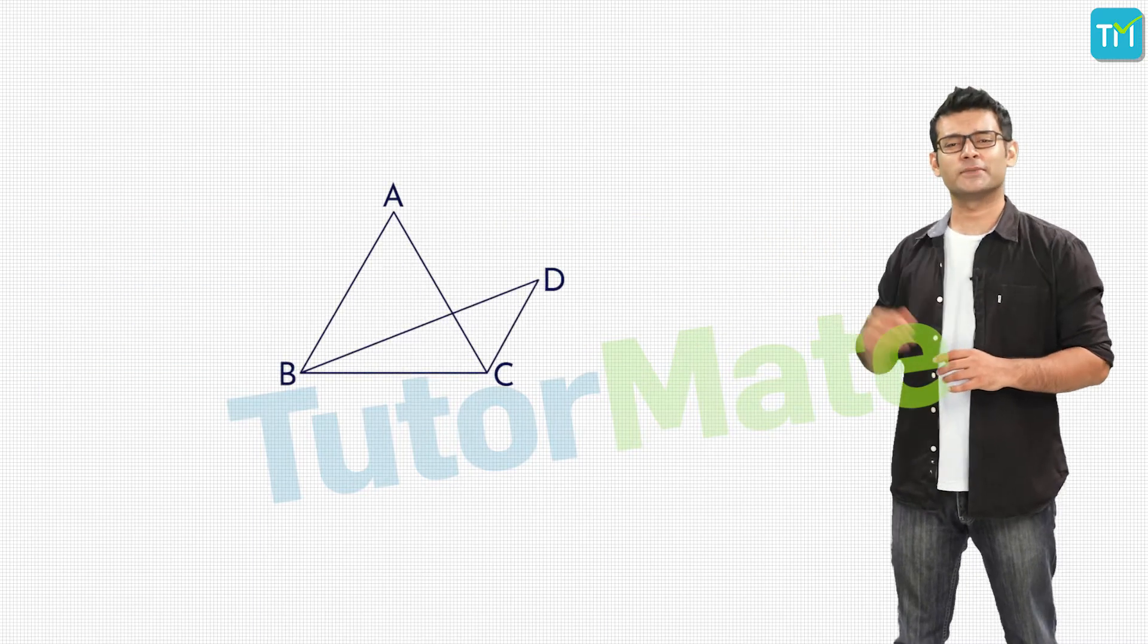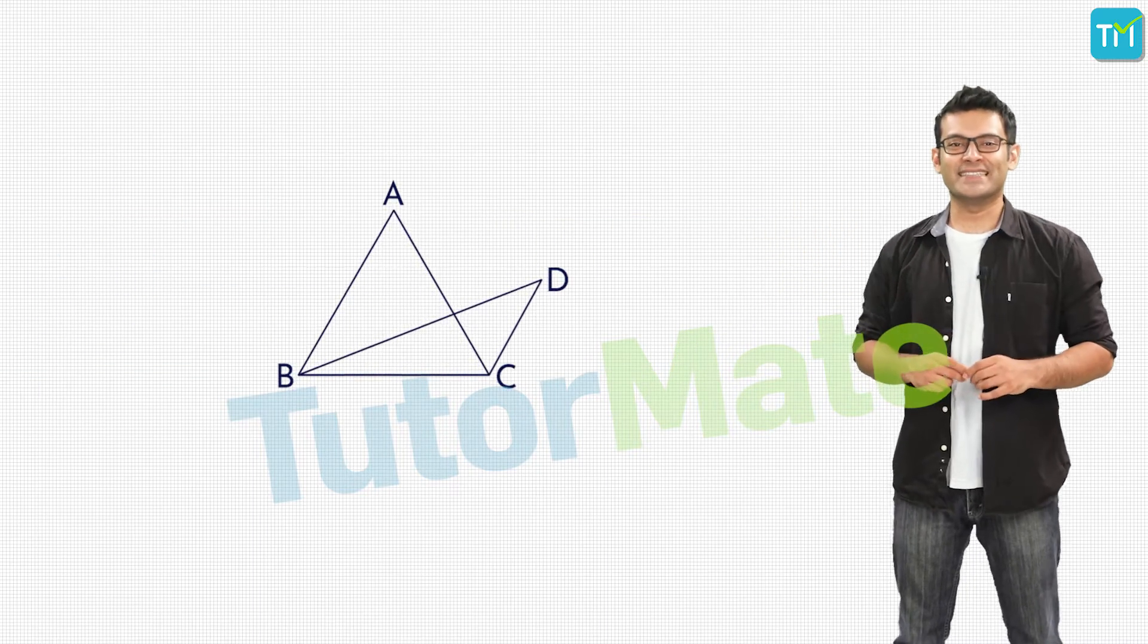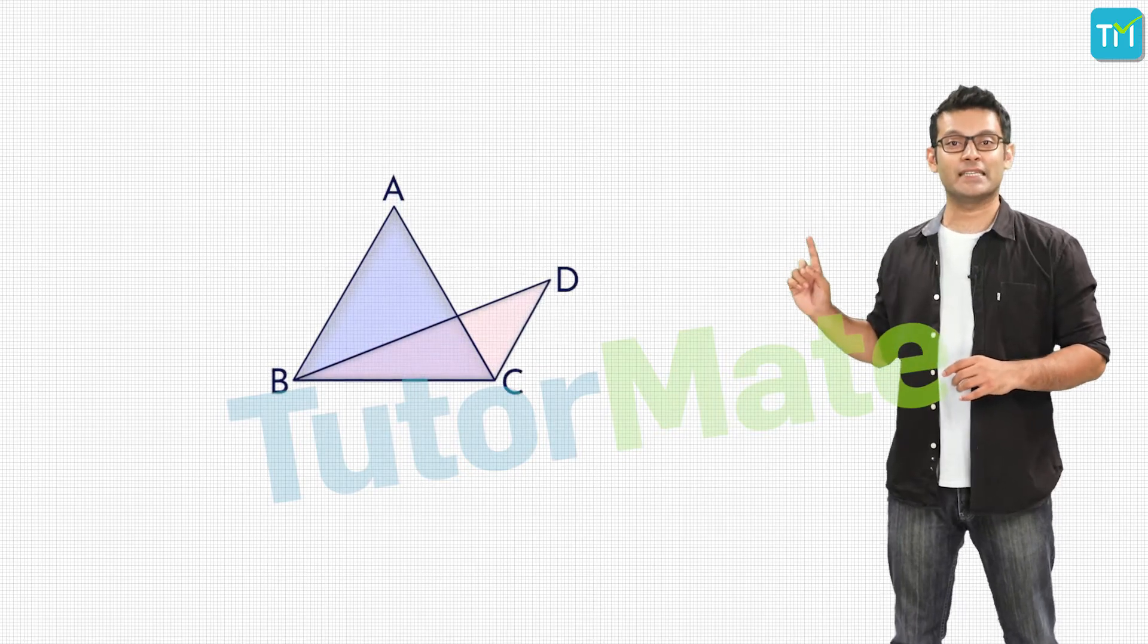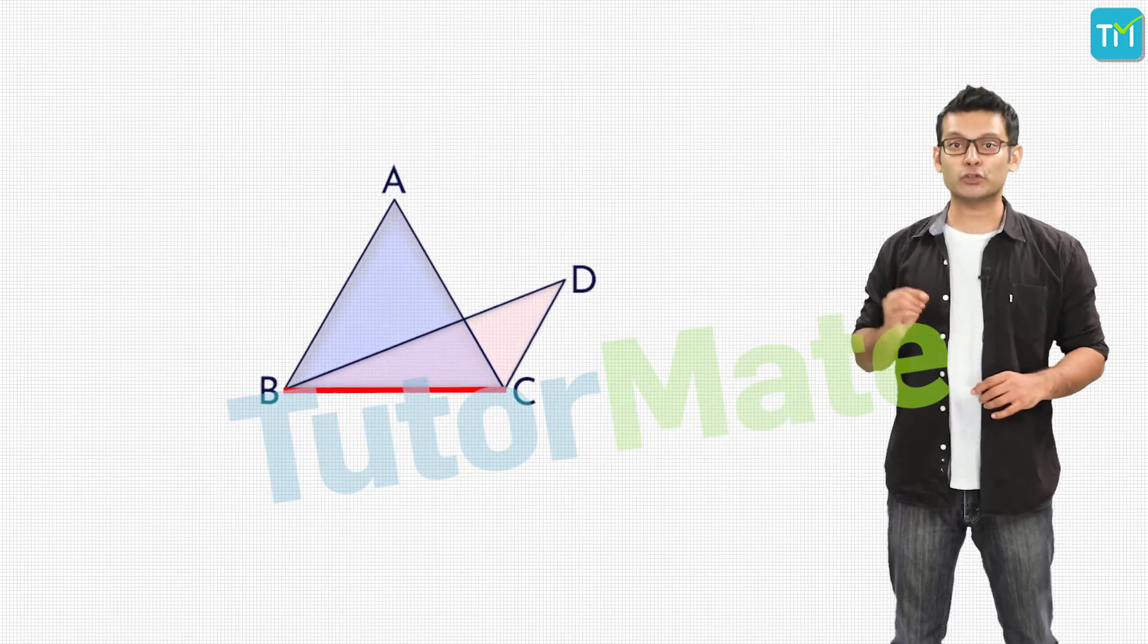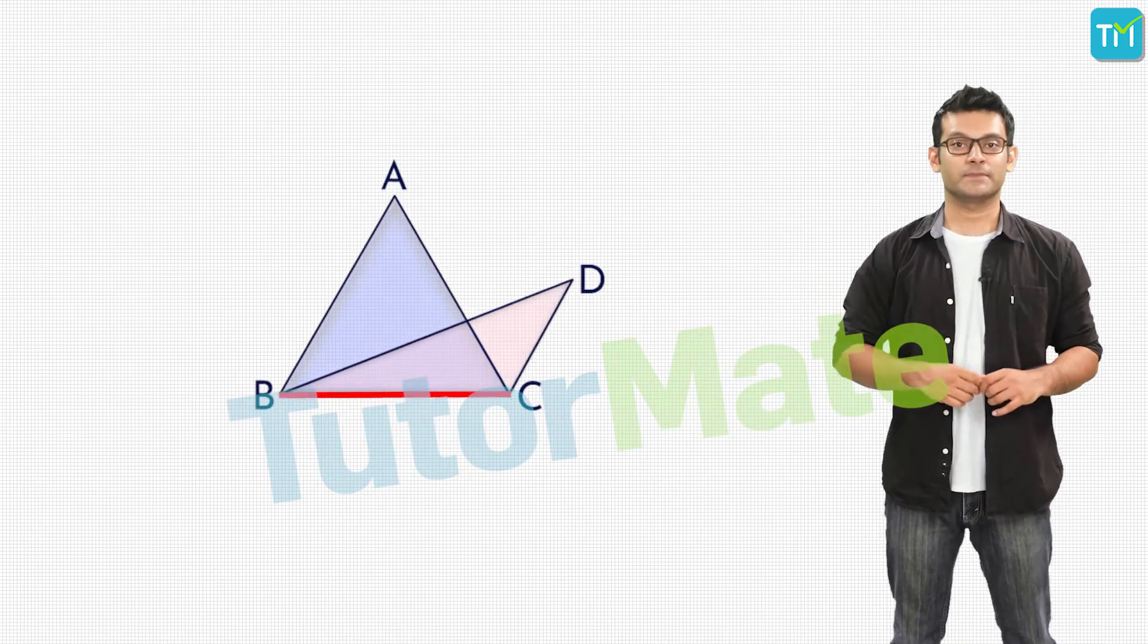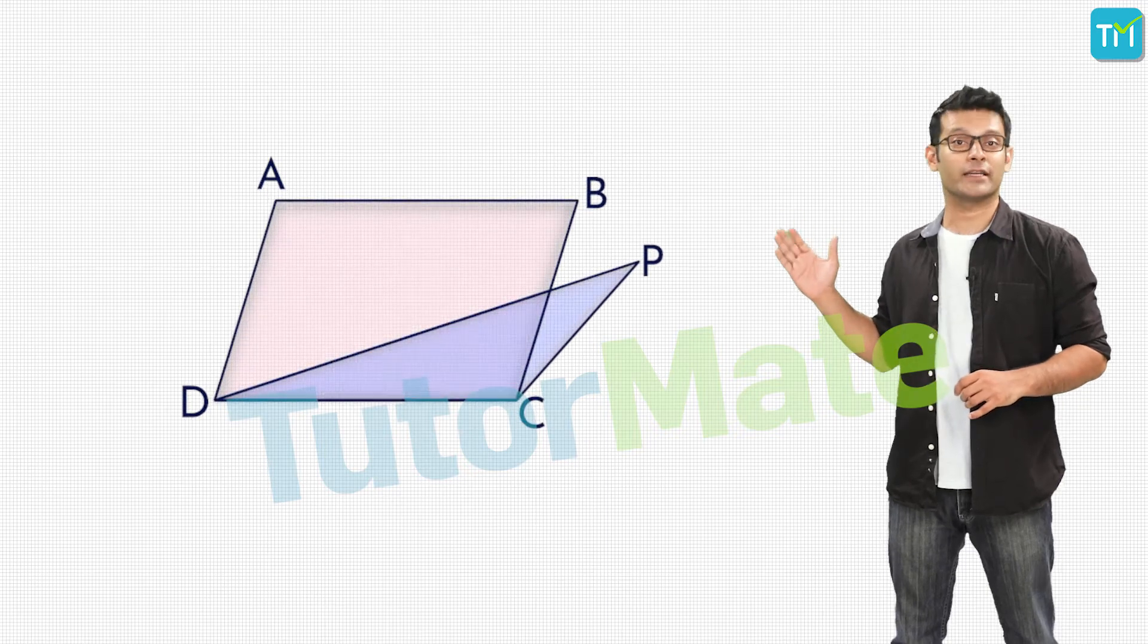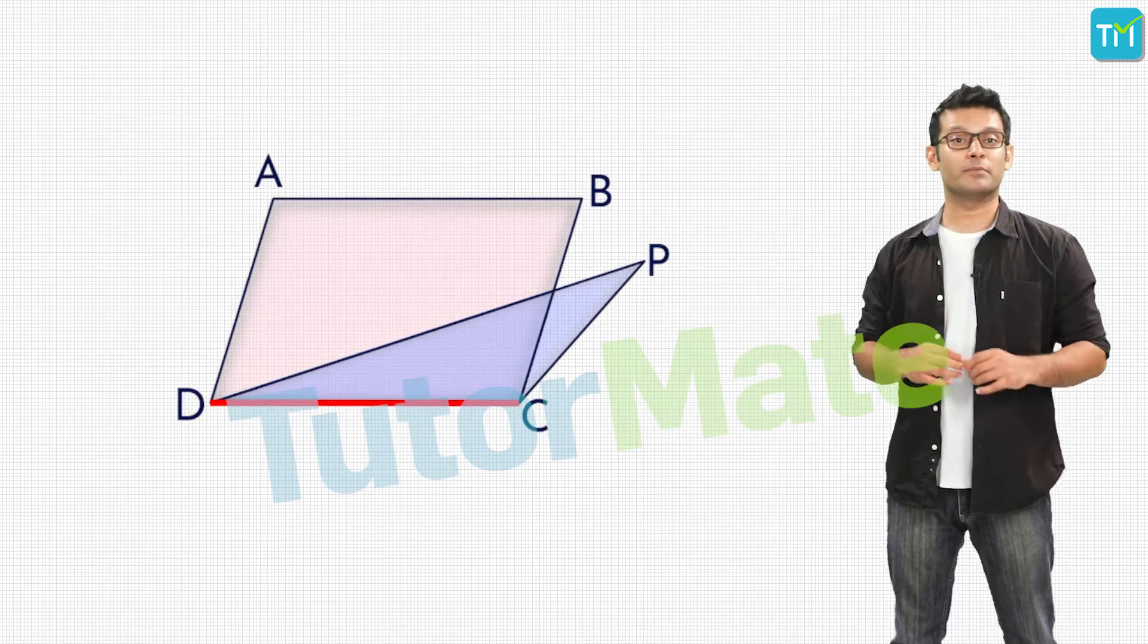And here? What do you see? That's right, there are two triangles ABC and DBC and these two triangles have a common side BC which also forms their common base.